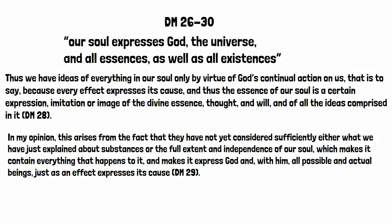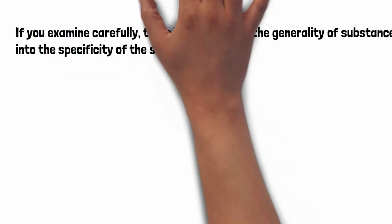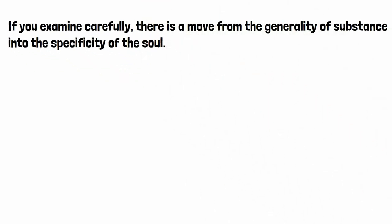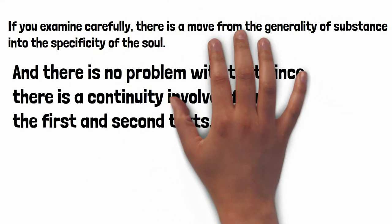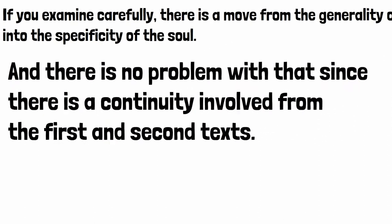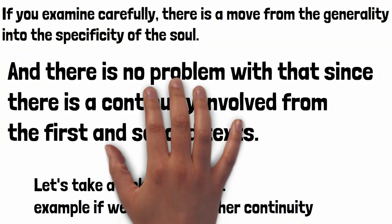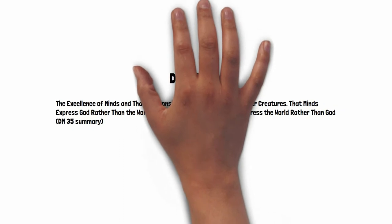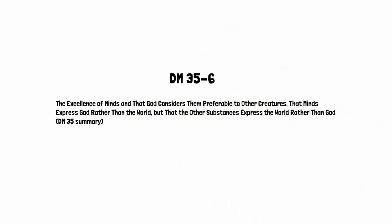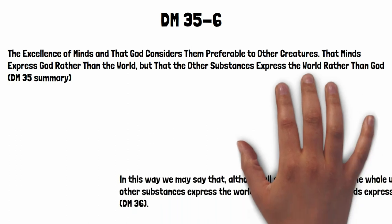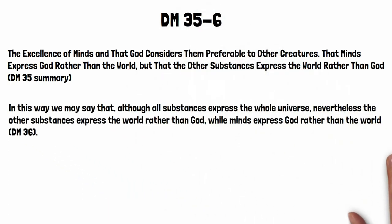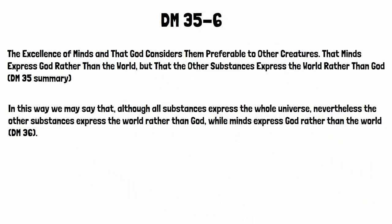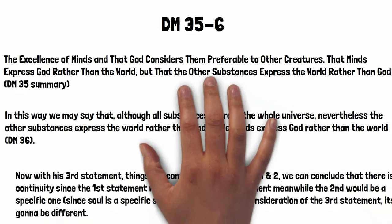Leibniz appears here to be focused on the human soul, rather than substances in general. Thus what is said here appears to differ from the earlier claim in DM 15 that every substance expresses the glory of God. Some continuity is provided by the claim that every substance expresses its cause, and God is the cause of every substance, which had occurred in DM 16 and is echoed in DM 28 and 29. Whether the central idea is that minds are better than other substances at expressing God, or that only minds can express God and other substances cannot, is not immediately obvious here. But clearly Leibniz is saying something in that general area.